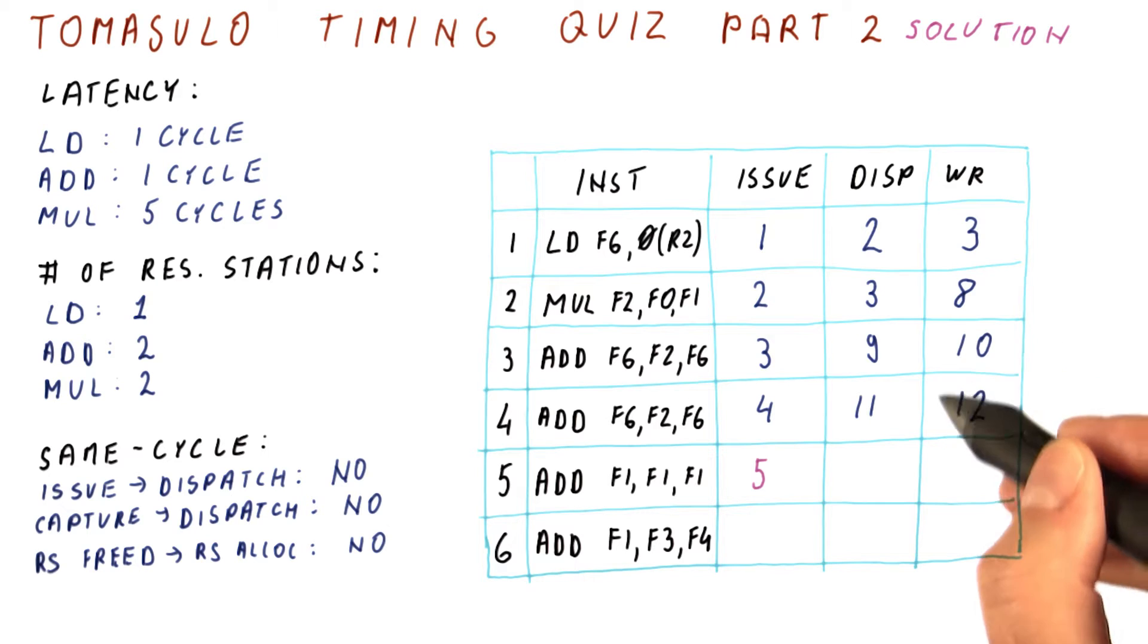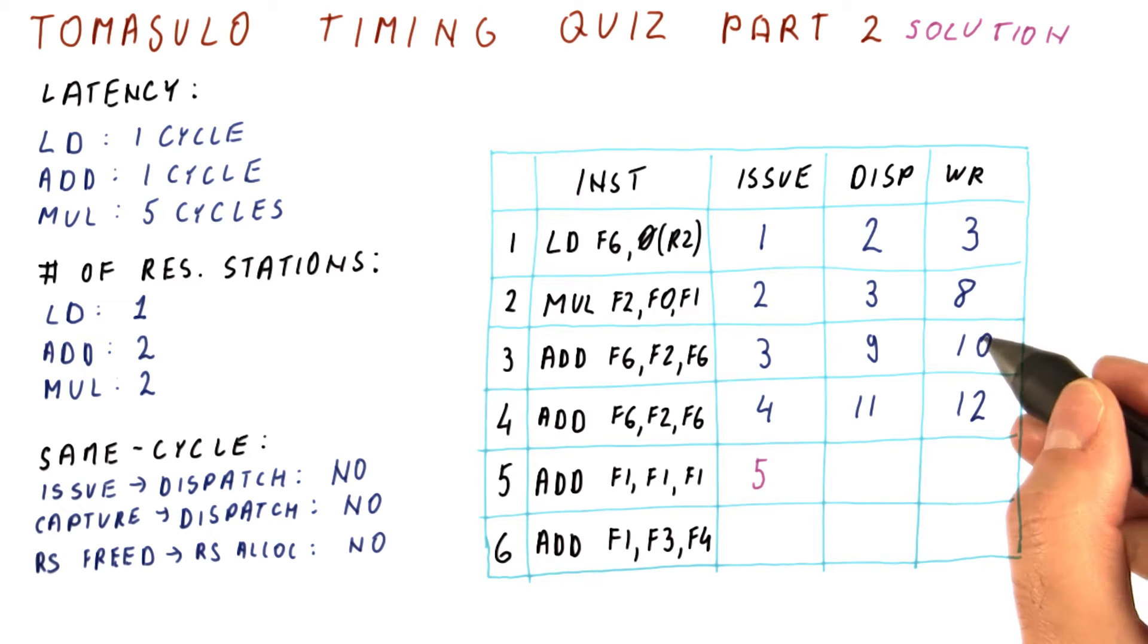Unfortunately, these two ADDs do not release their reservation stations until cycles ten and twelve. The first one that becomes available will be freed in cycle ten.